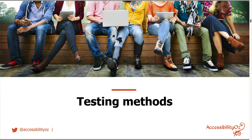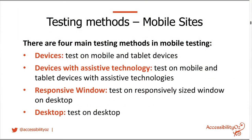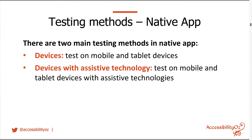Let's talk about testing methods. For mobile sites, there are four main testing methods: testing on a device, testing on a device with an assistive technology, testing on a responsive window, and testing on desktop. For native apps, there are two main testing methods — testing on devices and testing on devices with assistive technologies — because you really can't get to the code the way you can with websites. When I say websites, I mean applications, anything in a browser.